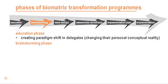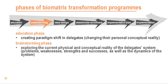The brainstorming phase consists of assignments that the delegates have to do during the education phase; they also have to facilitate surveys amongst stakeholders. Both the assignments and the surveys are concerned with exploring the physical and conceptual reality of the current system which the delegate represents. The brainstorming phase looks at both the problems and weaknesses of the current system as well as its strengths and successes.